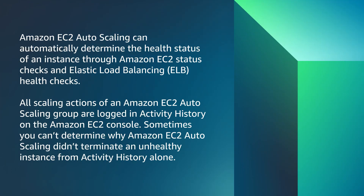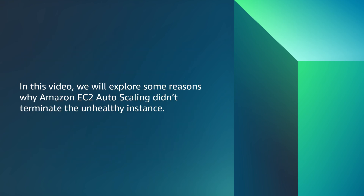Amazon EC2 Auto Scaling can automatically determine the health status of an instance through Amazon EC2 status checks and elastic load balancing health checks. All scaling actions of an Amazon EC2 Auto Scaling group are logged in activity history on the Amazon EC2 console. Sometimes, you can't determine why Amazon EC2 Auto Scaling didn't terminate an unhealthy instance from activity history alone. In this video, we will explore some reasons why Amazon EC2 Auto Scaling didn't terminate the unhealthy instance.